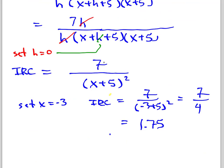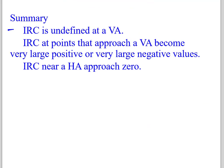So again, I'm never going to ask you that, but for those people who like the algebra, that's something to look at. So quick summary, IRC is undefined at vertical asymptotes. You can't find an IRC at a vertical asymptote, period. IRC at points that approach a vertical asymptote, they become very large in positive or very large in negative. So your slopes get steep. The IRC near a horizontal asymptote, they start to approach zero. This means they get very flat.